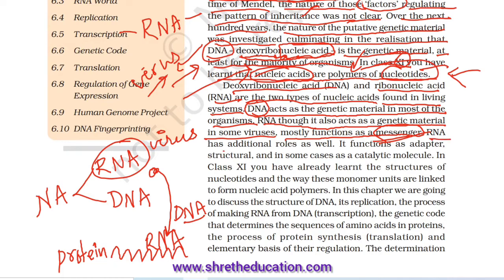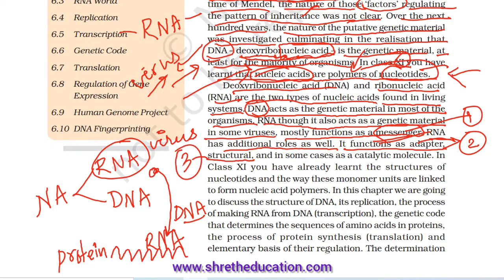RNA has additional roles as well. RNA role number 1 is messenger. It also functions as an adaptor. In some cases, it functions as a catalytic molecule.